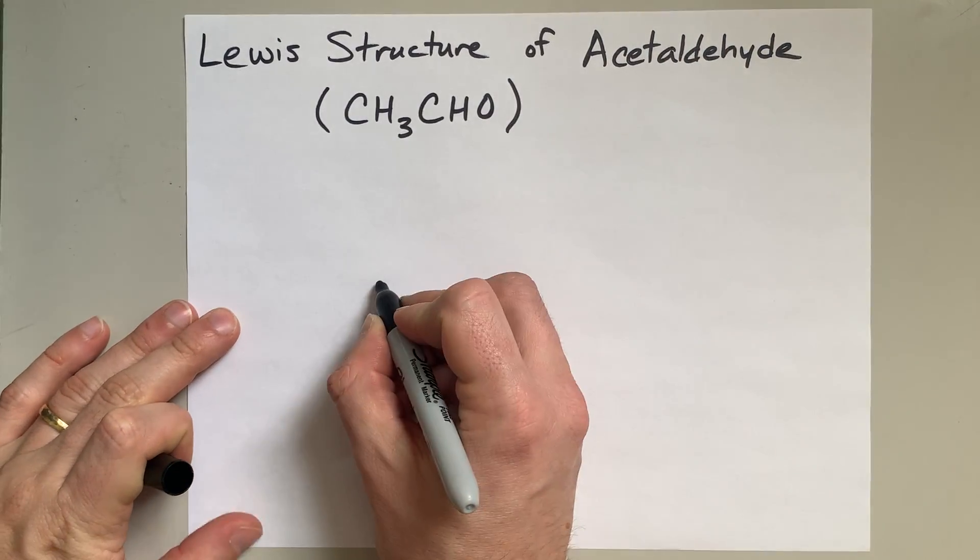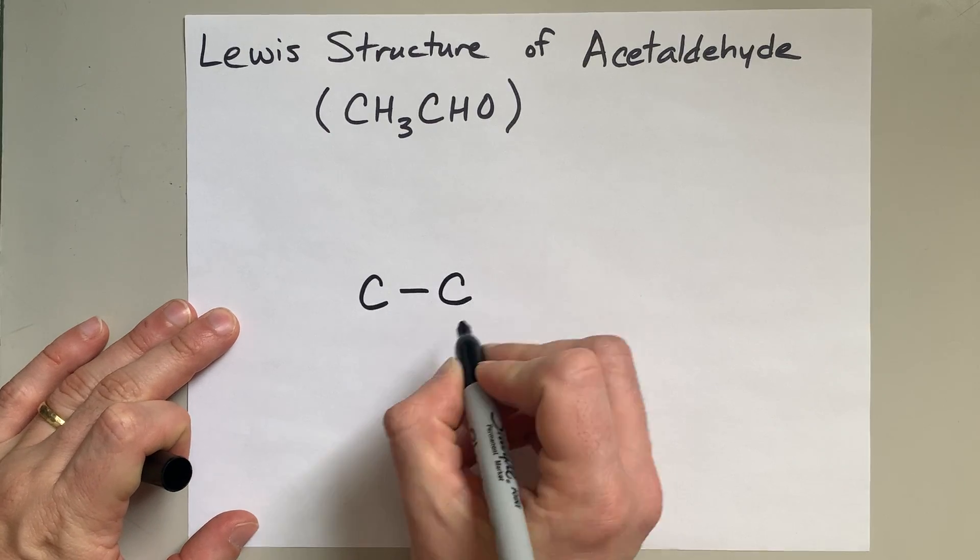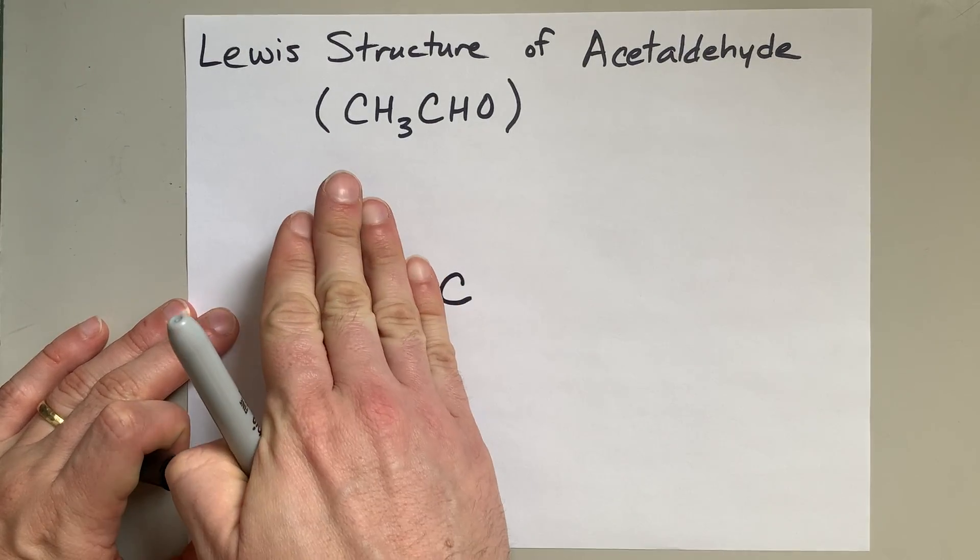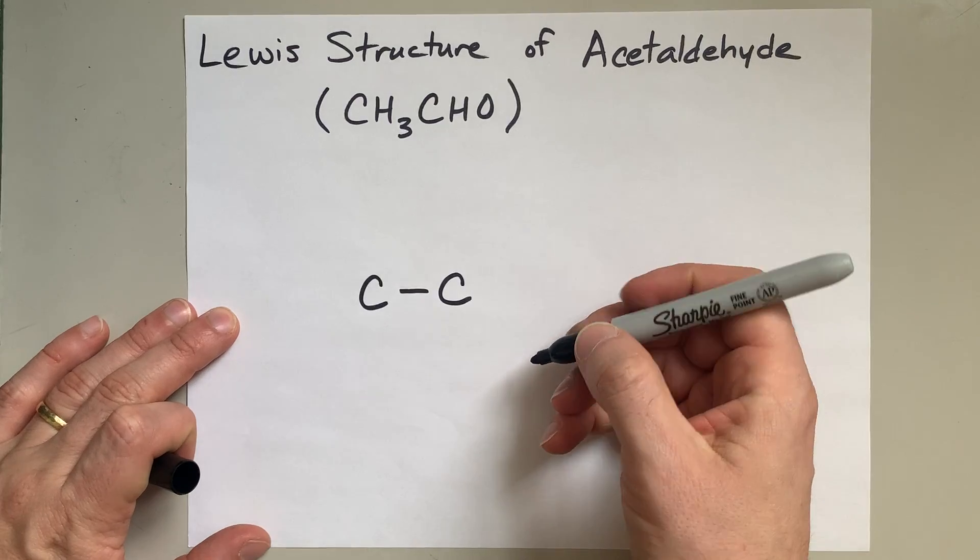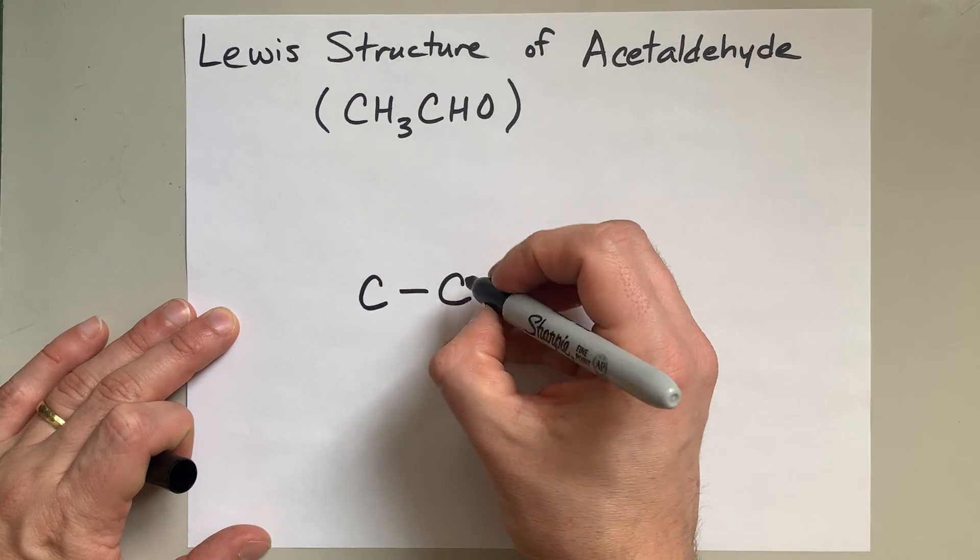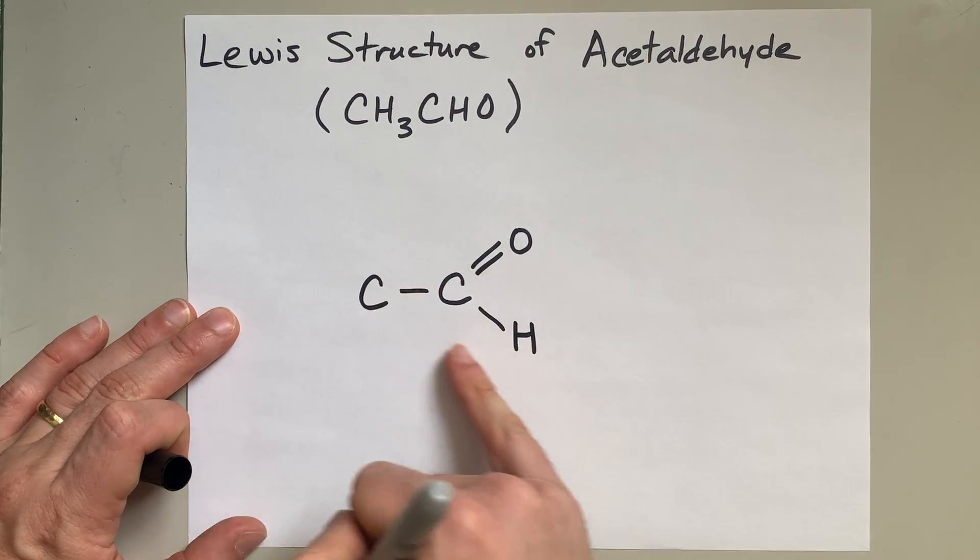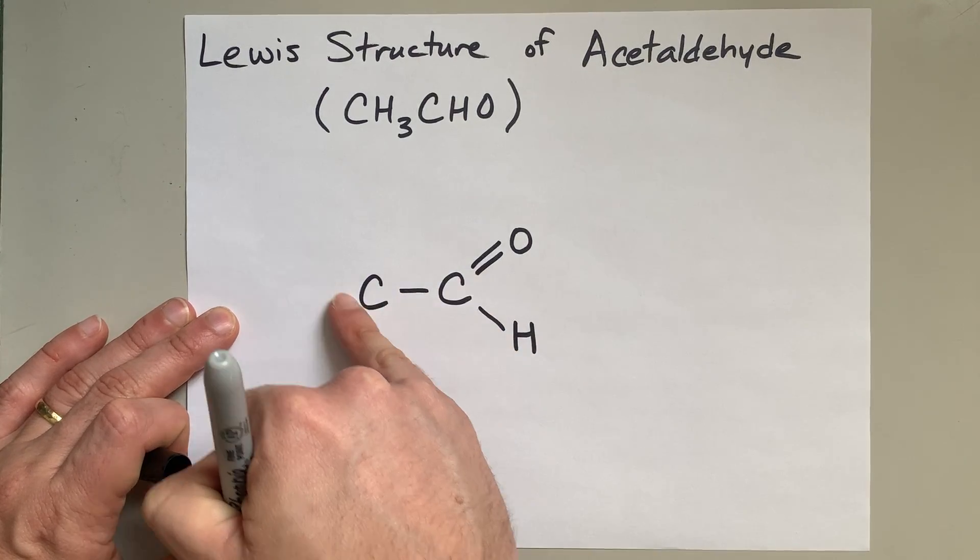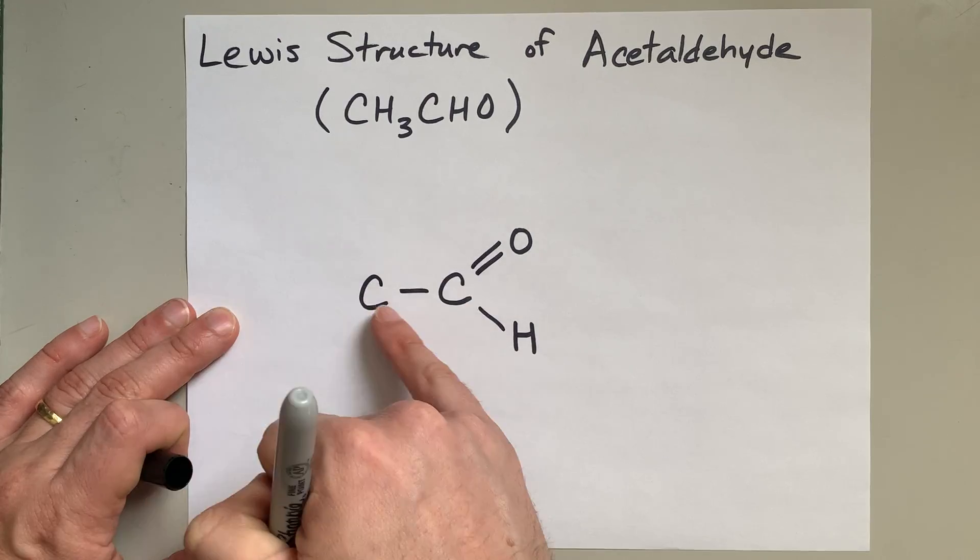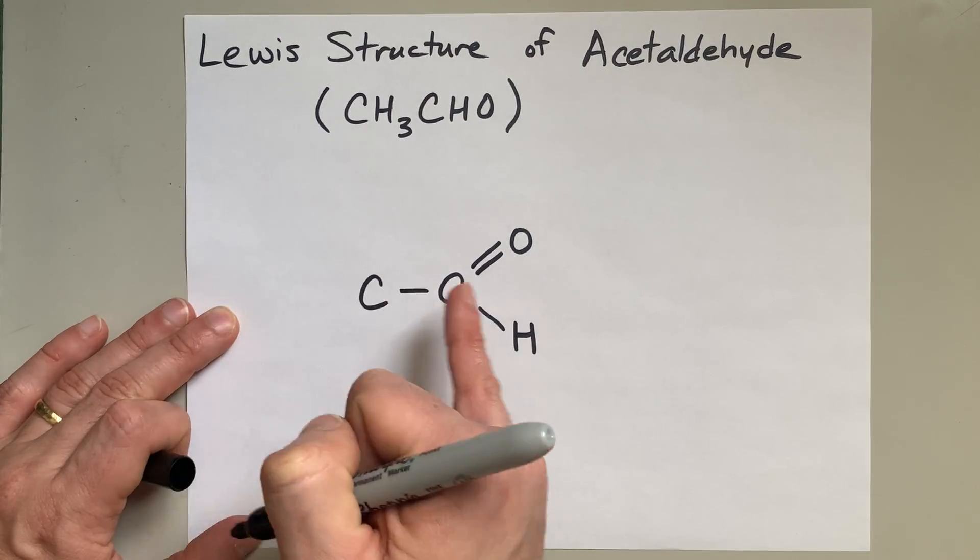An aldehyde is when you have a carbon chain, although the carbon chain can be as little as one carbon atom, and then this CHO is due to a double bonded O and an H at the end of the carbon chain. There could have been like three, four, five, up to a hundred of these carbons.